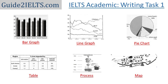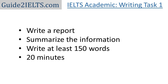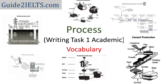Welcome to Guide to IELTS. The Writing Task 1 of IELTS Academic requires writing a report describing a given graph, table, process, or map. The report should be at least 150 words and needs to be written in about 20 minutes. In this video, we will discuss the vocabulary to be used when writing about a process.